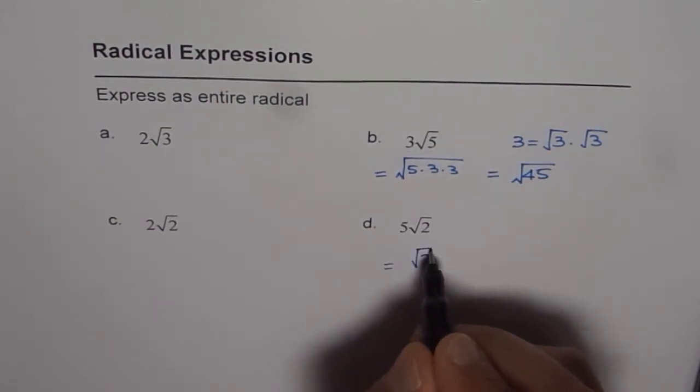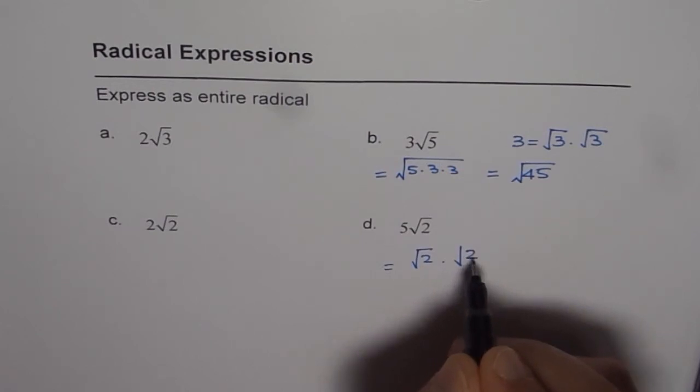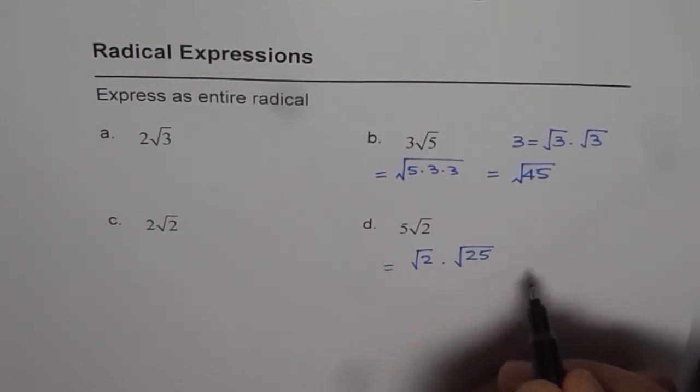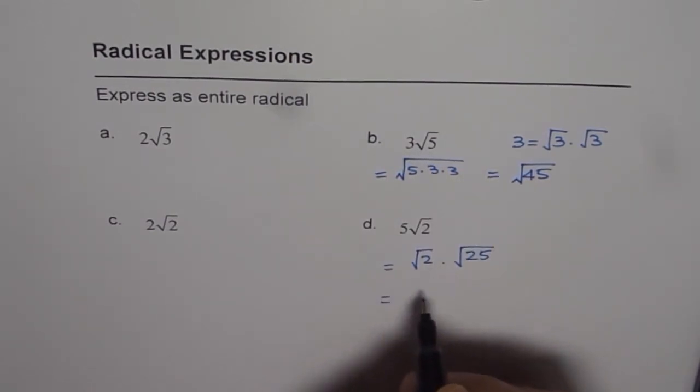So that means we are talking about square root of 2 times, not 5, but 25 square root. Right? So when you multiply these, what do you get? You get square root of 50.